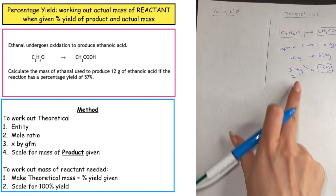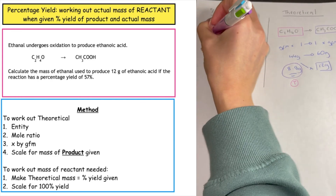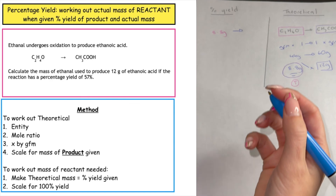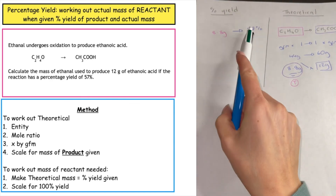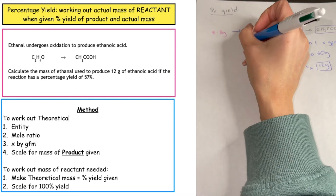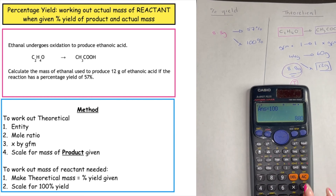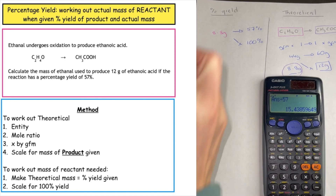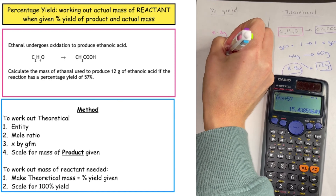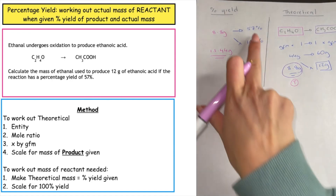For the next stage, we take our theoretical value of 8.8 grams and make it equal to the percentage yield given in the question, which is 57%. Since this only produces 57% of product, we need to scale for 100% and cross multiply: 8.8 times 100 divided by 57, giving us a mass of 15.44 grams of reactant needed to obtain 12 grams of product at 57% yield.